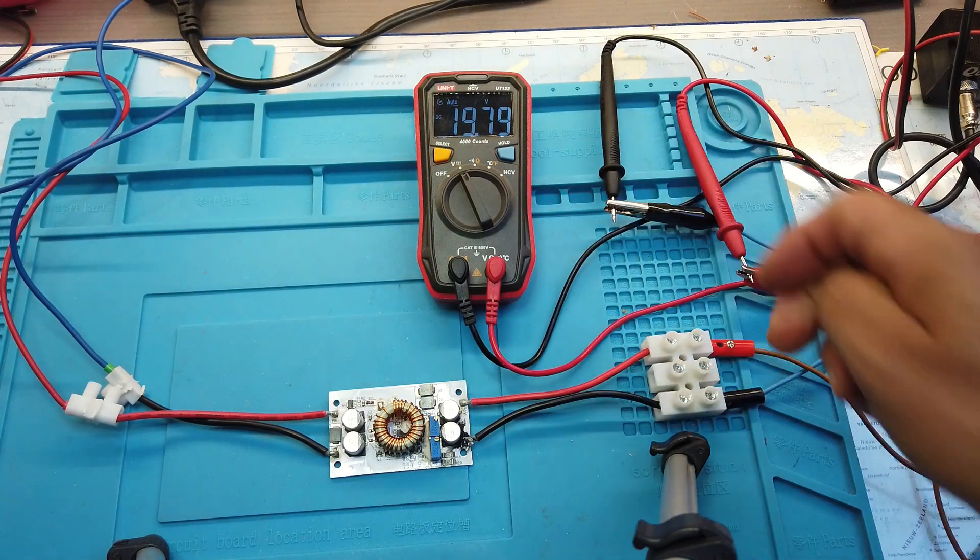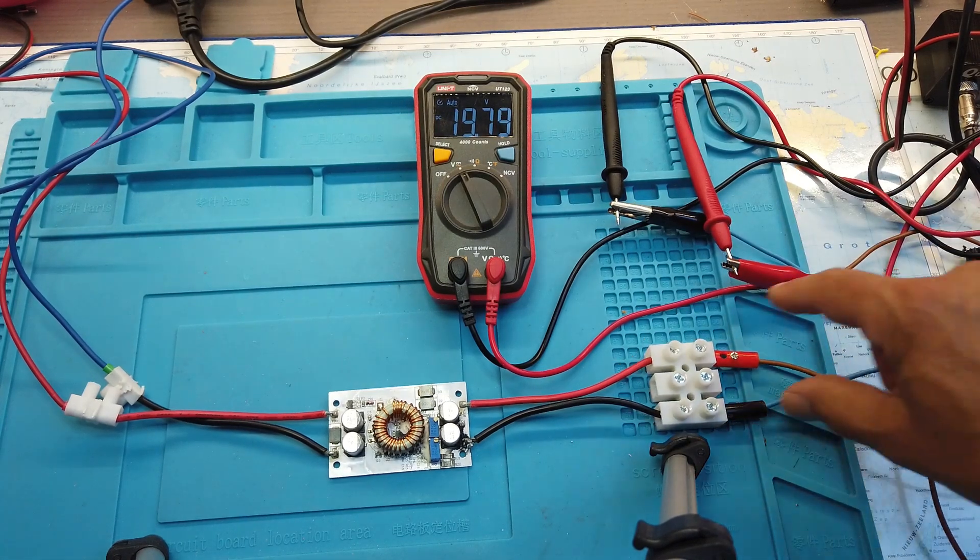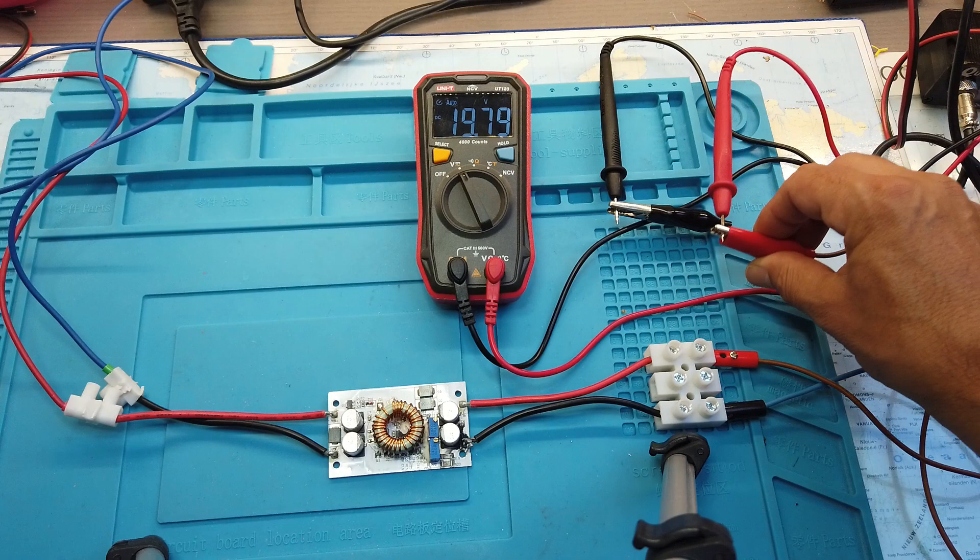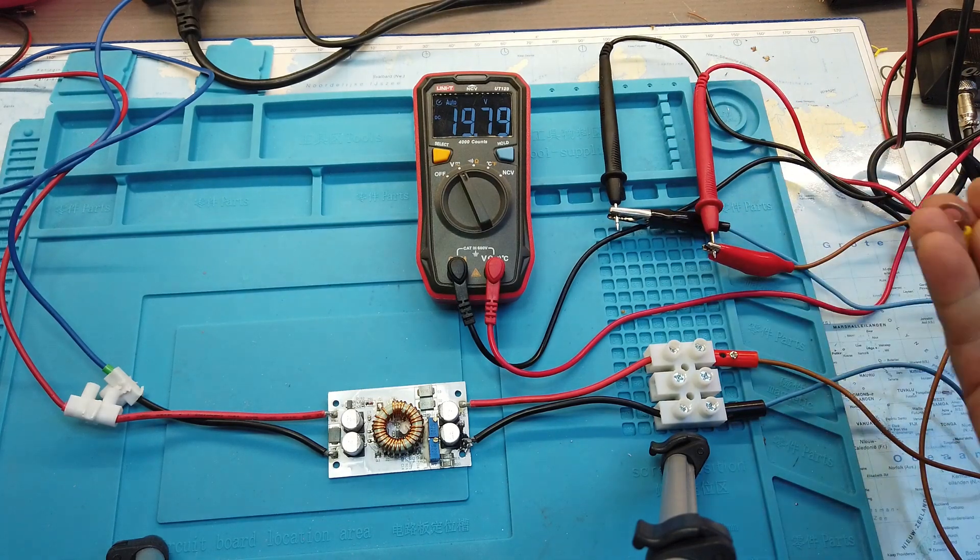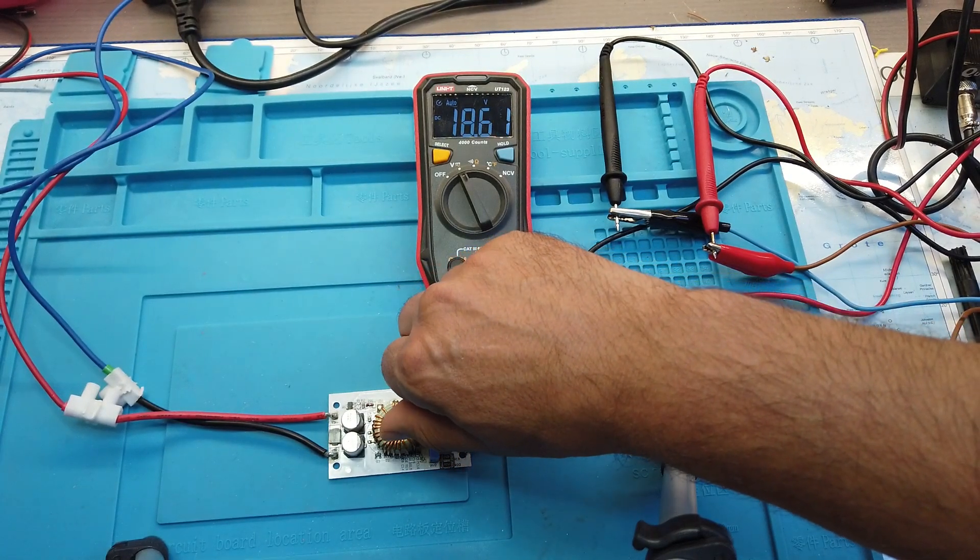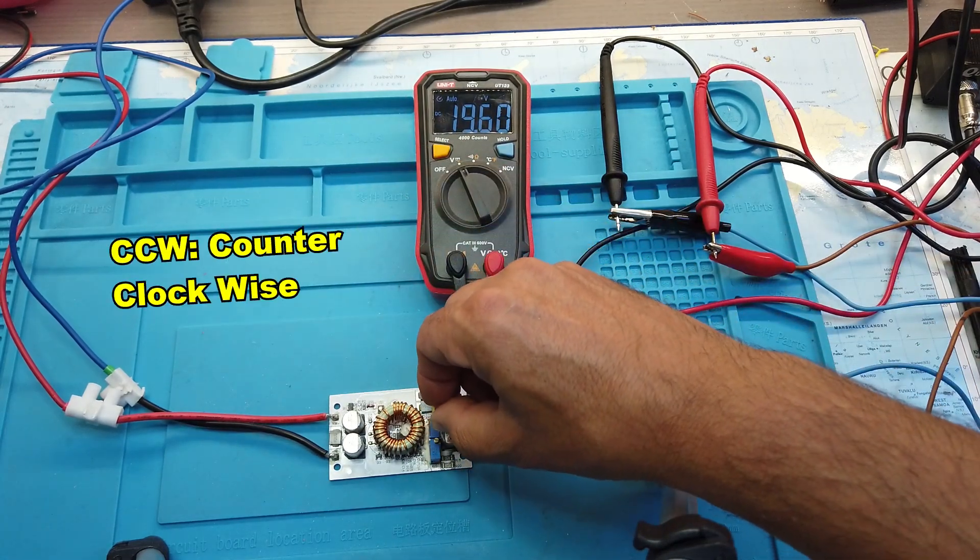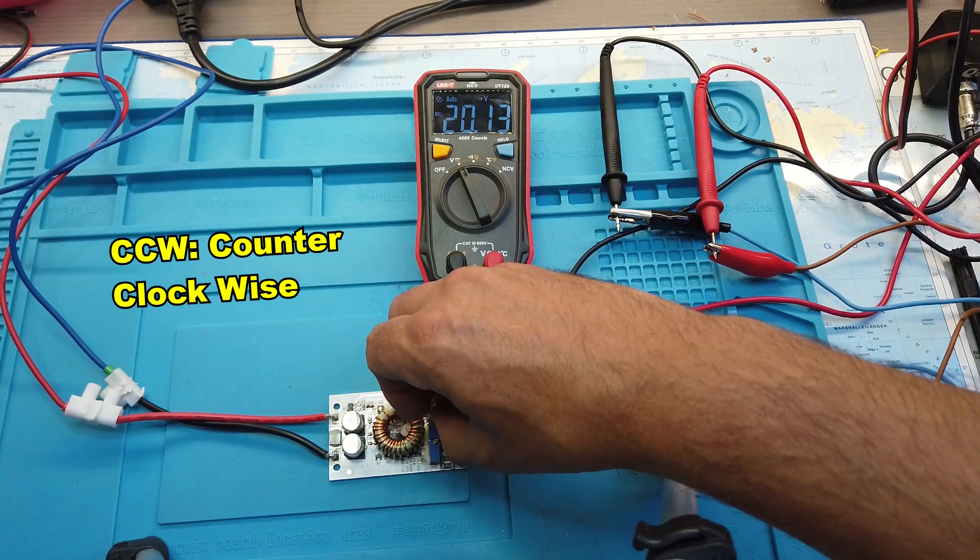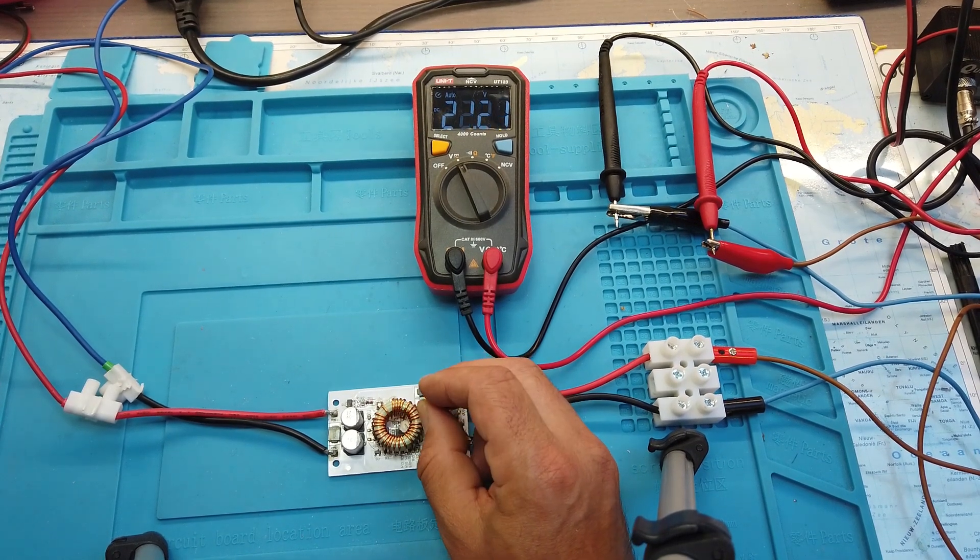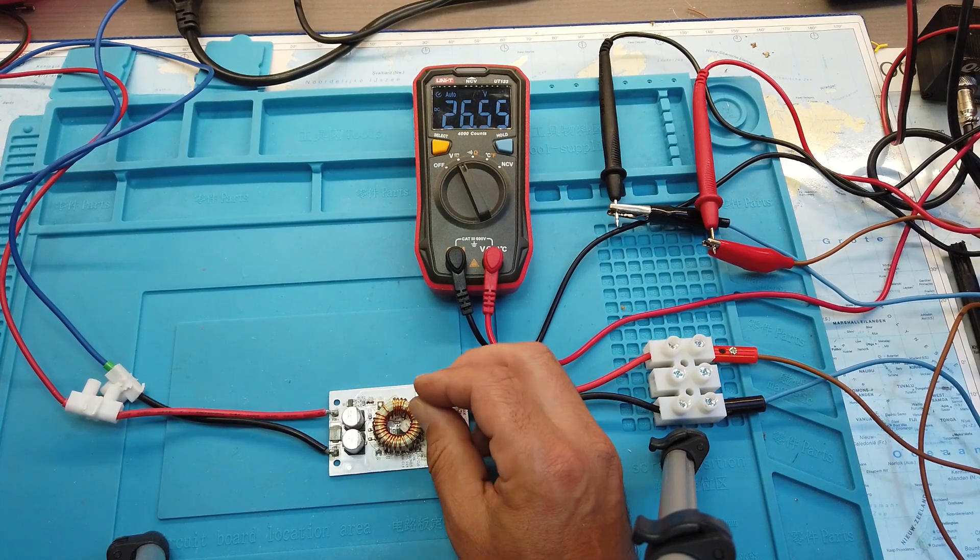As you can see the output is now 19.7. The voltmeter is connected with the output of the booster module. So in real life I will connect these two connectors with the inverter and then slowly increase the voltage. This is decreasing. You have to turn it backwards. As you can see the voltage is rising.